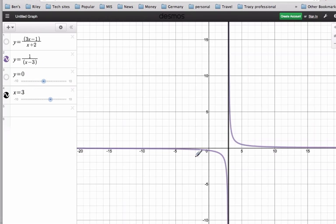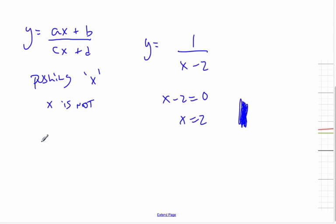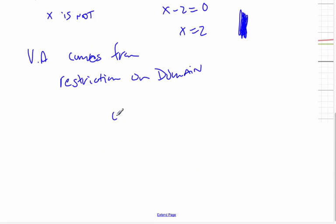Therefore, I get a vertical asymptote. So the vertical asymptote comes from the restriction on domain, the bottom of the fraction. That's when it looks like this, or even if the equation would look like this: 3x minus 1 over x plus 2.